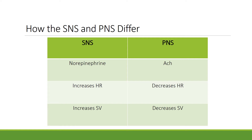The SNS secretes a neurotransmitter known as norepinephrine, or noradrenaline, which plays a role in stress control. The PNS secretes a neurotransmitter known as ACh, or acetylcholine. The effect of norepinephrine is to increase heart rate and stroke volume, while the effect of acetylcholine is to decrease heart rate and stroke volume.